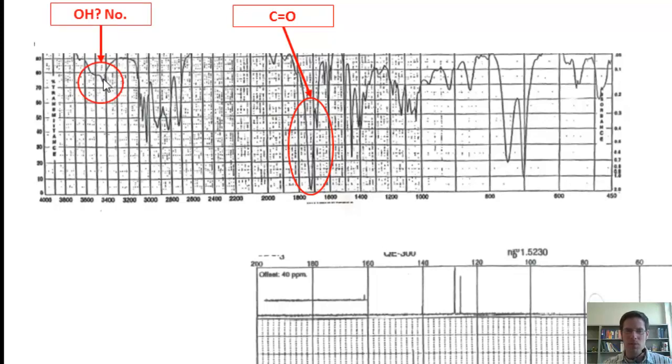I know there's this little blip here, but that is way too tiny to be an OH for this type of compound. This is likely caused by a small contaminant, either an amine or water, that was in the sample when it was run by IR.